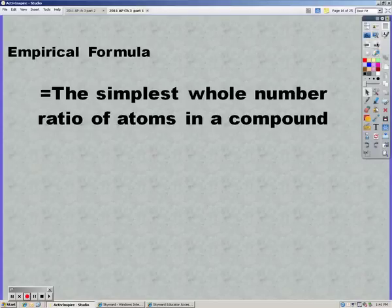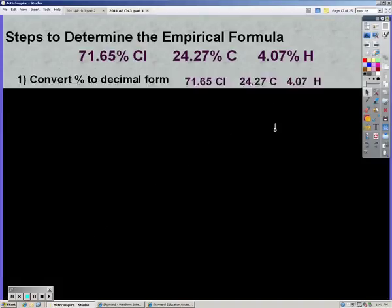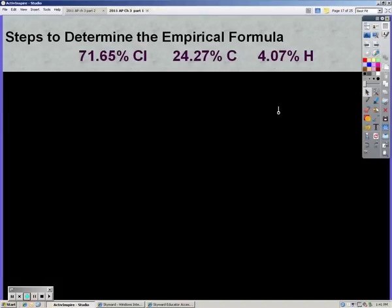An empirical formula is the simplest whole number ratio of atoms in a compound. It cannot be reduced if it's an empirical formula. We're going to work through the example problem on your page.